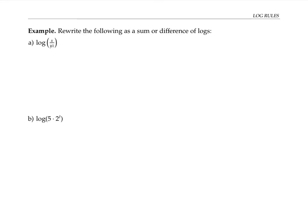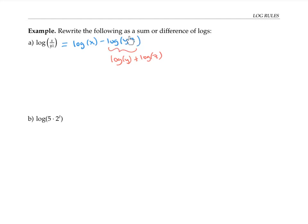Let's use the log rules to rewrite the following expressions as a sum or difference of logs. In the first expression, we have a log base 10 of a quotient, so we can rewrite the log of the quotient as the difference of the logs. Now we still have the log of a product, so I can rewrite that as the sum of the logs — that is, log of y plus log of z. When I put things together, I have to be careful because I'm subtracting the entire log expression, so I need to subtract both terms of the sum. I'll put them in parentheses and then distribute the negative sign to get my final answer.